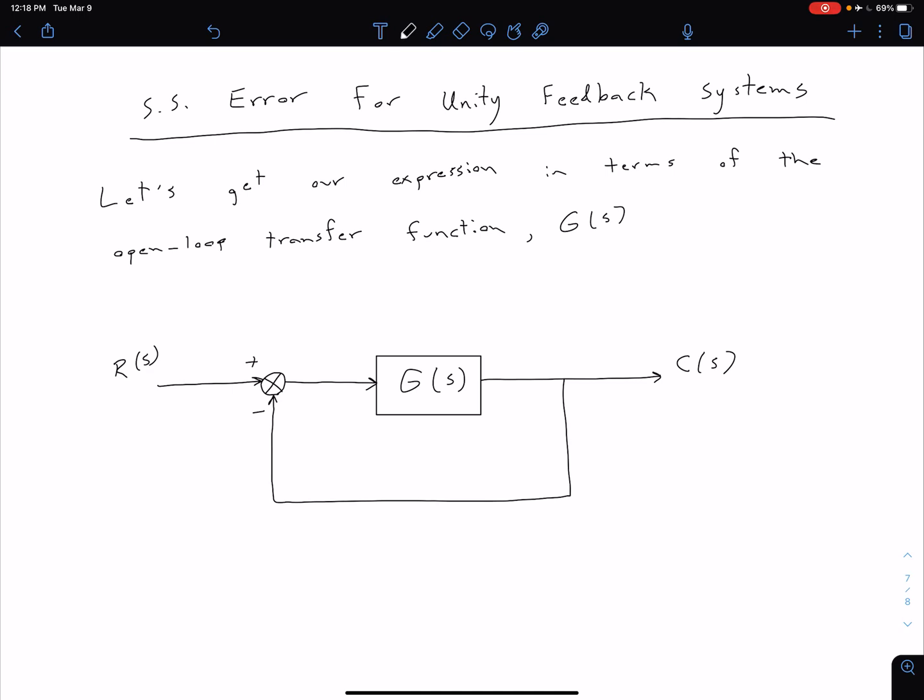I've got a unity feedback system drawn below. You can see we have a forward gain G of S, or as it's also called an open-loop transfer function. The idea there is that before we close this feedback loop, if we were to take this feedback loop out, that would be our open-loop transfer function.